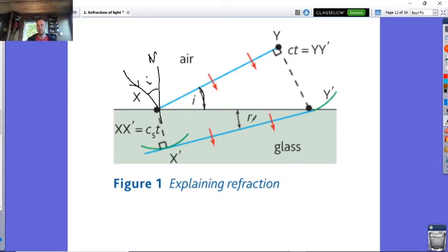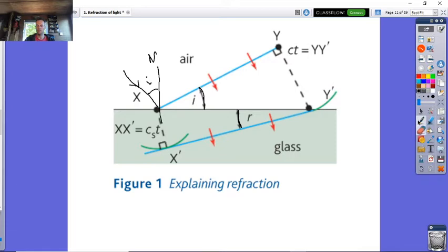As the light goes in, the wave front changes direction. Therefore, now this bit here is going to be your angle of refraction because the light ray comes in here. That's where this angle i and angle r comes from.